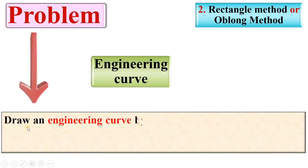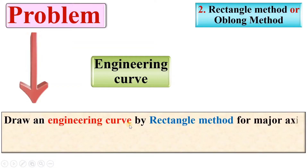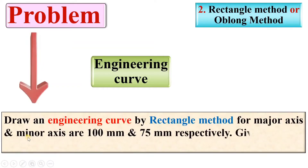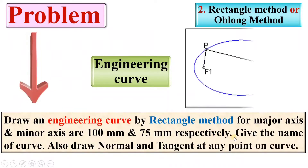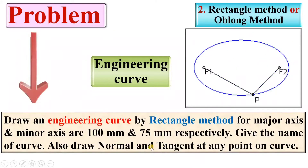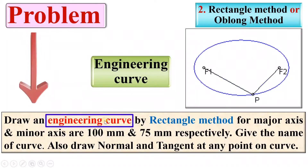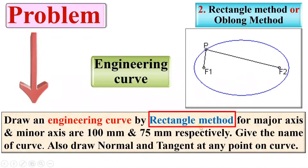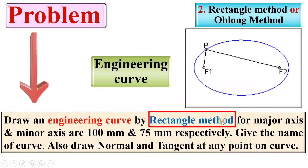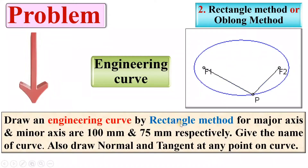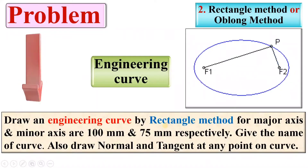Let us first see the description of the given problem: Draw an engineering curve by the rectangle method where the major axis and minor axis are 100 mm and 75 mm respectively. Note that the method is specifically mentioned in the description, so you must follow this particular method. If the method is not mentioned, then you can follow any suitable method for the ellipse.